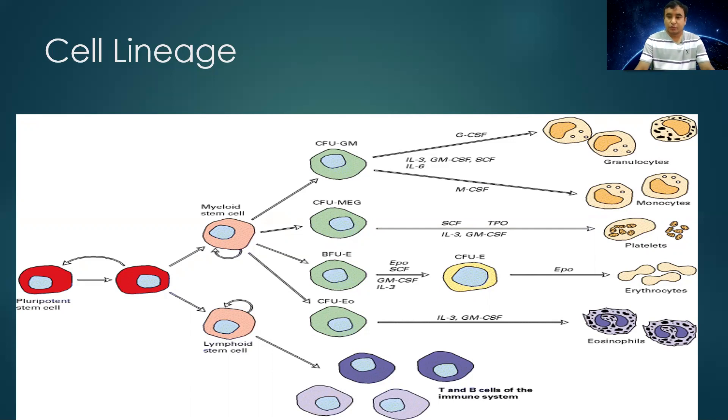So neutrophils, lymphocytes, monocytes, platelets, and eosinophils are all part of the myeloid series of cells.